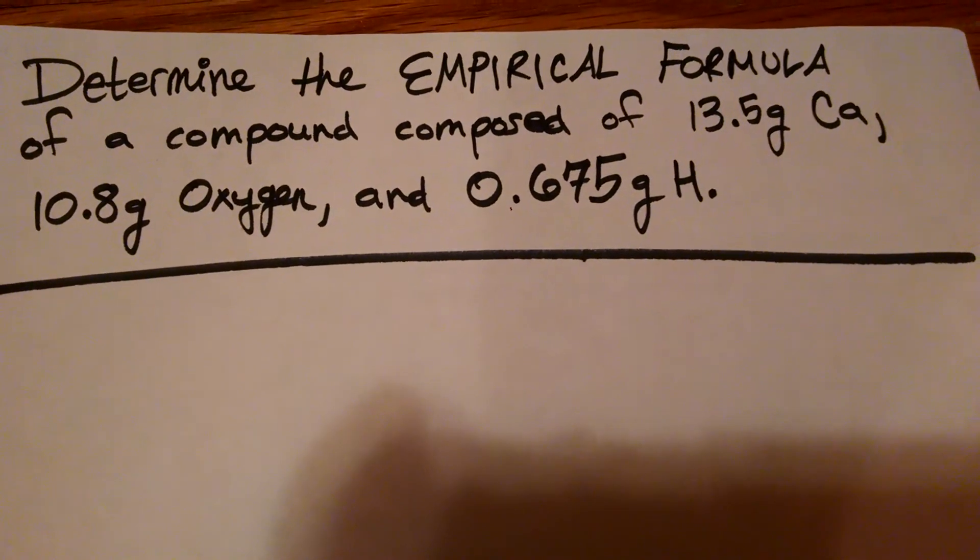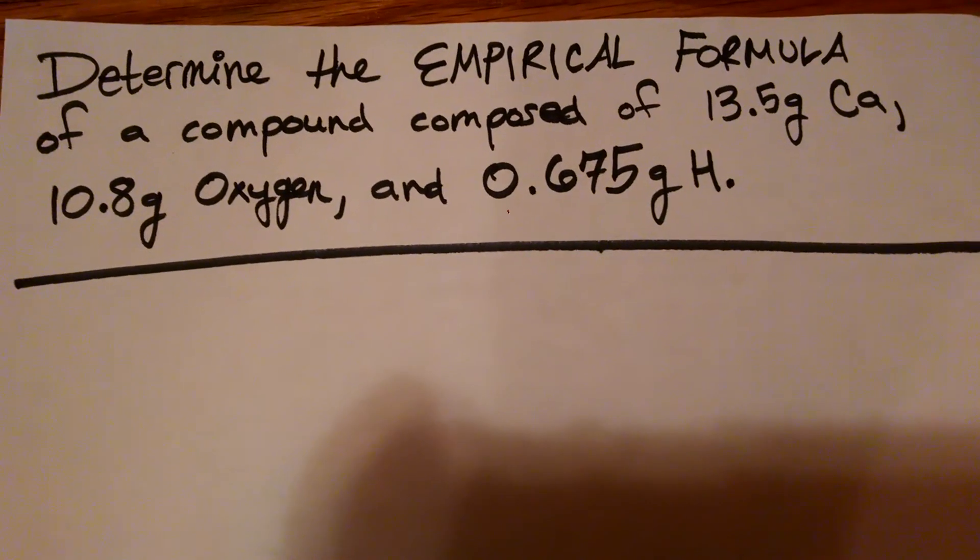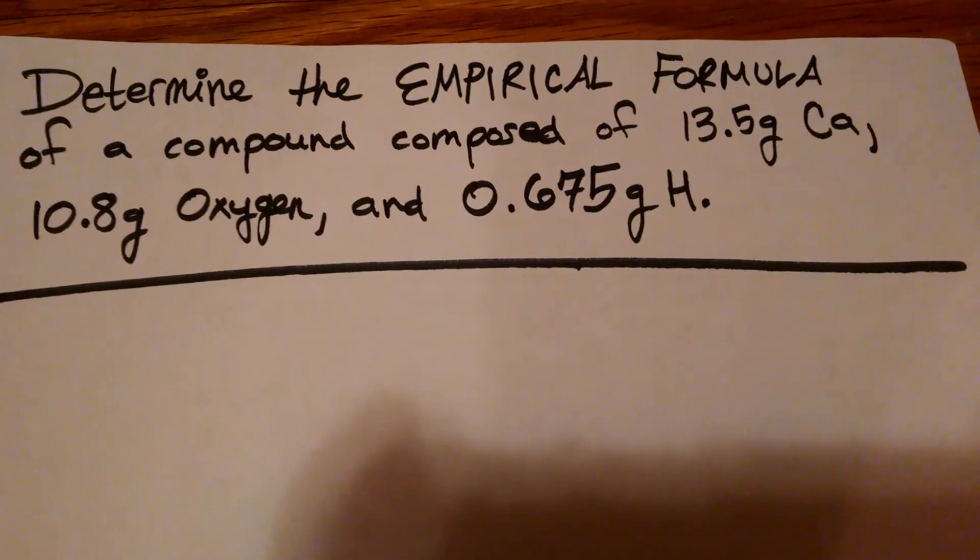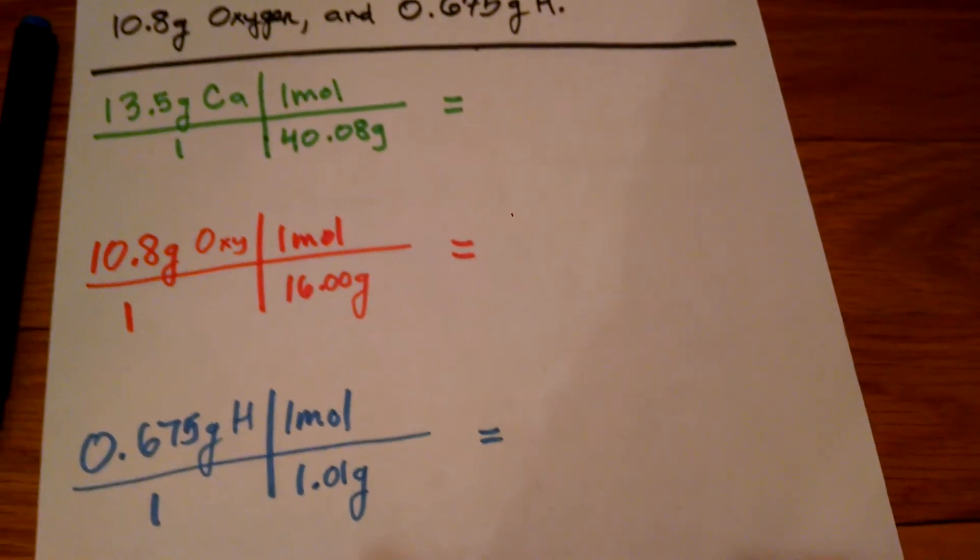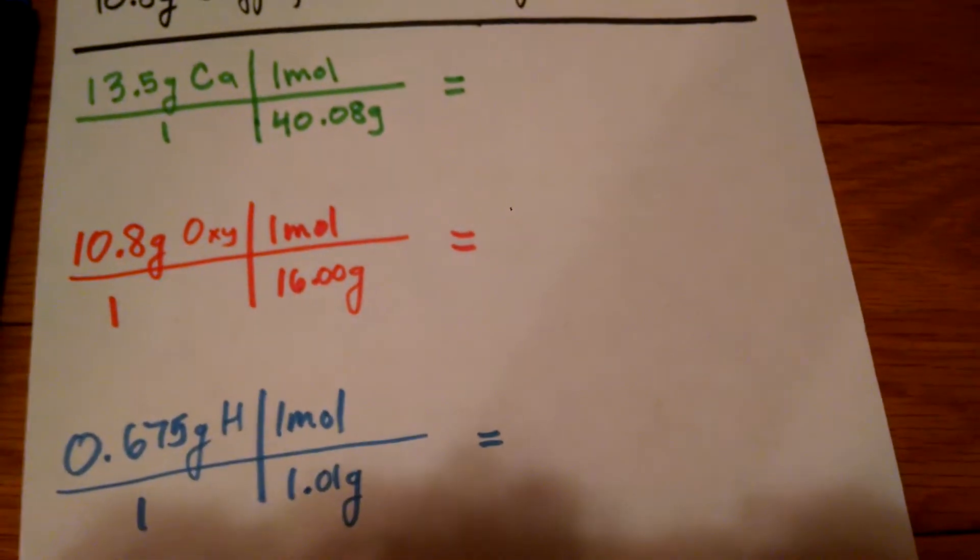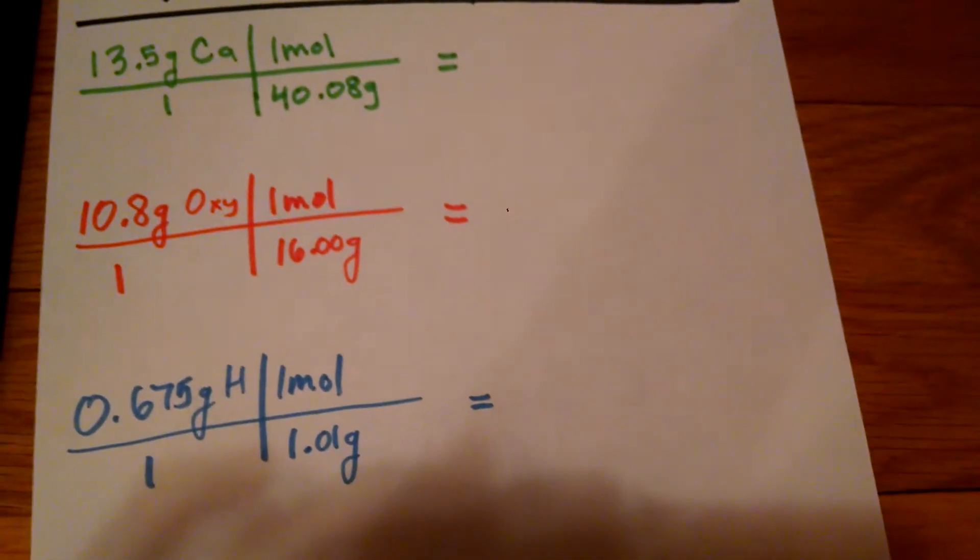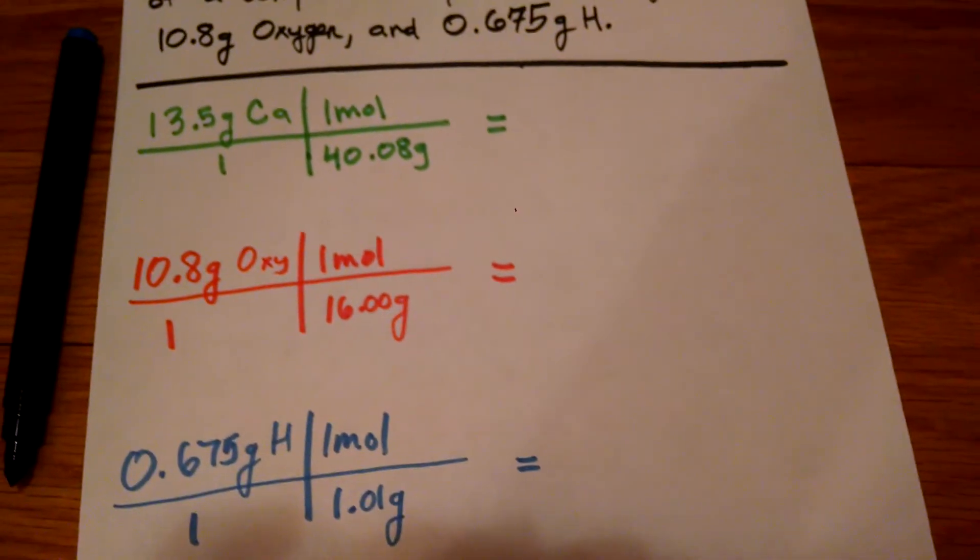We are going to approach this problem the exact same way. Since we are in the mole unit, we're going to convert each of these grams into moles. I've set up some mole conversions for us. We've got calcium in green, oxygen in red, maybe that looks orange, I don't know, hydrogen in blue.